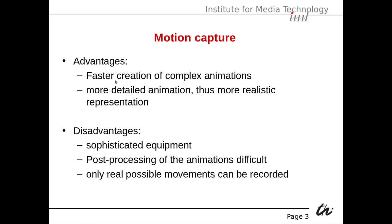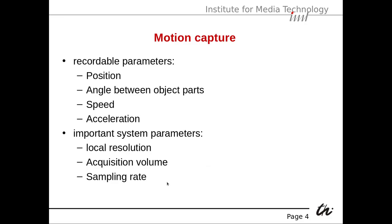The advantages of motion capture are fast creation of complex animations. You have an actor who moves in a certain way, and you basically copy his movements, giving you a more detailed and thus more realistic animation. The disadvantages are that you need sophisticated equipment to capture the actor's precise movement. Post-processing of animations is often difficult, for instance if there are errors. Also, only real possible movements can be recorded, which is a disadvantage for fantasy movies with fantasy beings, since you are restricted by what humans can do.